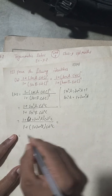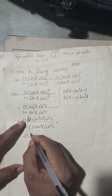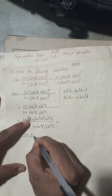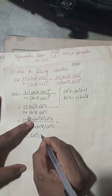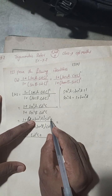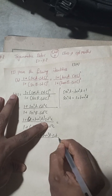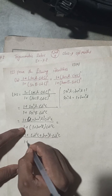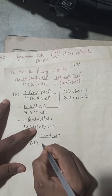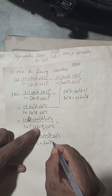Expanding: the numerator is 1 + cot²C + tan²A · cot²C, and the denominator is 1 + cot²C + tan²B · cot²C. Now we have 1 + cot²C in both numerator and denominator, so we need to derive the formula for 1 + cot²C.